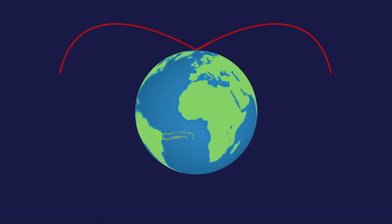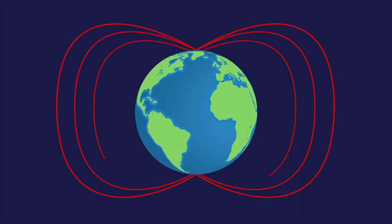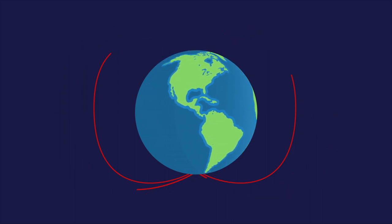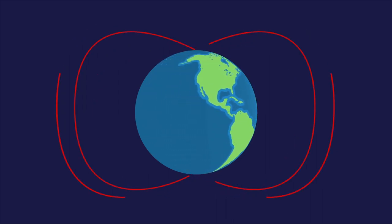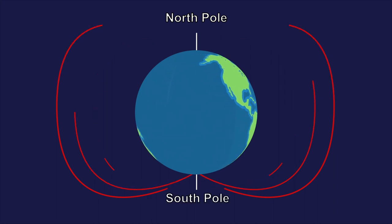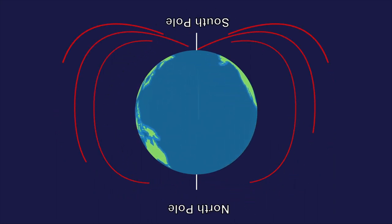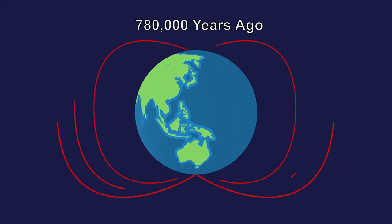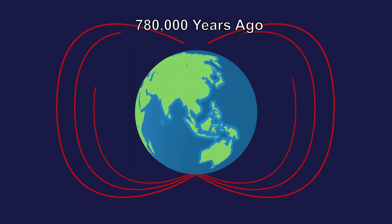But lately its magnetic field is changing, and fast. Hundreds of times before in Earth's history, the magnetic field has reversed, switching from north to south and south to north. So this is nothing new. The last switch happened 780,000 years ago.